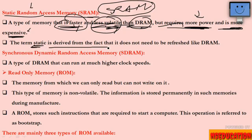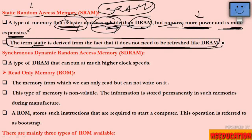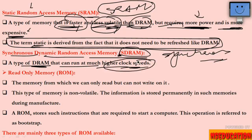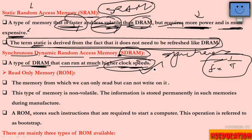Static means it does not need to be refreshed like DRAM. Next is SDRAM — Synchronous Dynamic Random Access Memory. It is a type of DRAM with 'synchronous' added, meaning its clock speed is higher. DRAM that can run at much higher clock speed. The frequency is equal to 1/T, where T is the clock period. So the computer's frequency is decided by the clock speed.